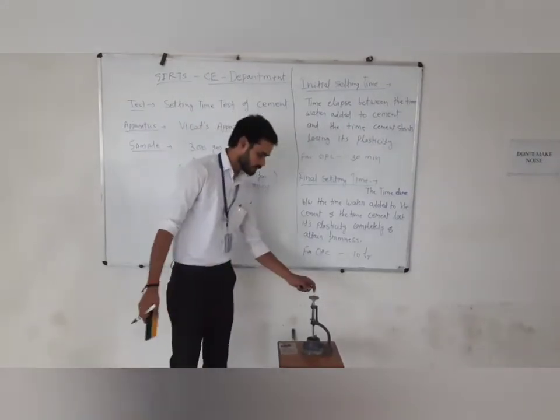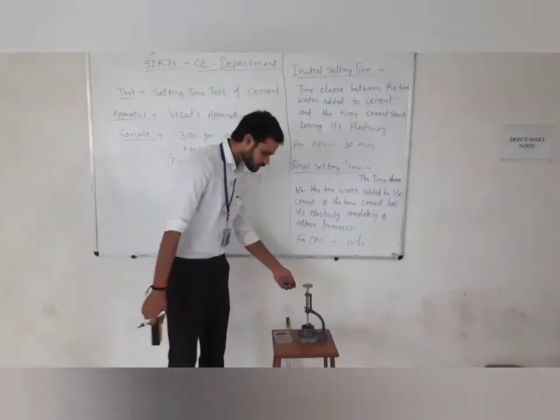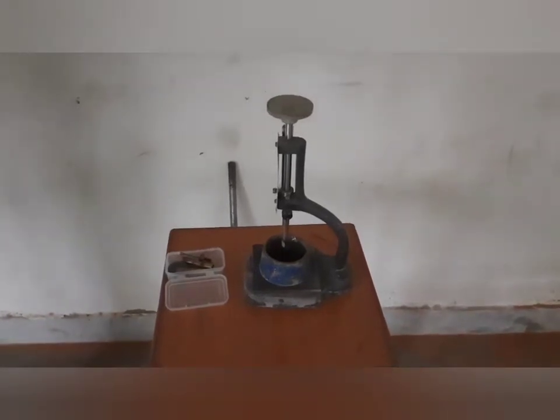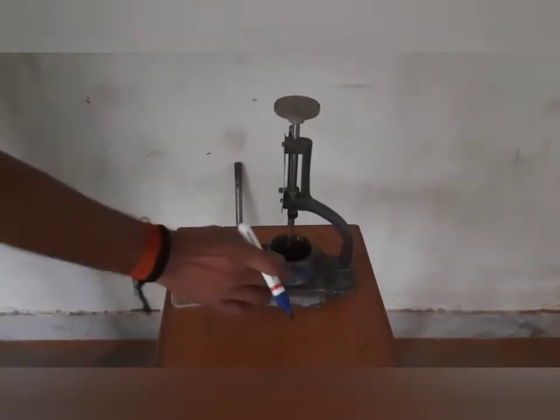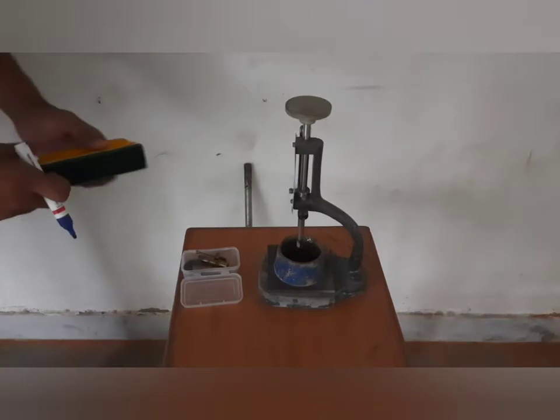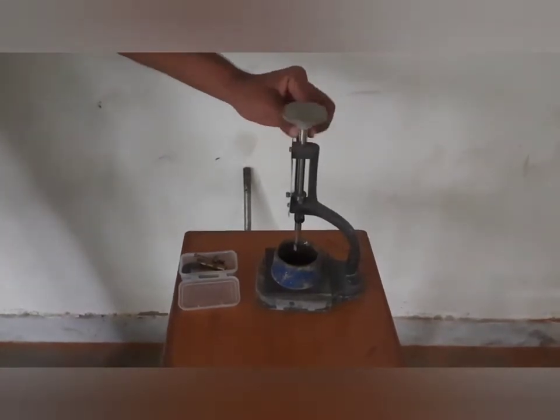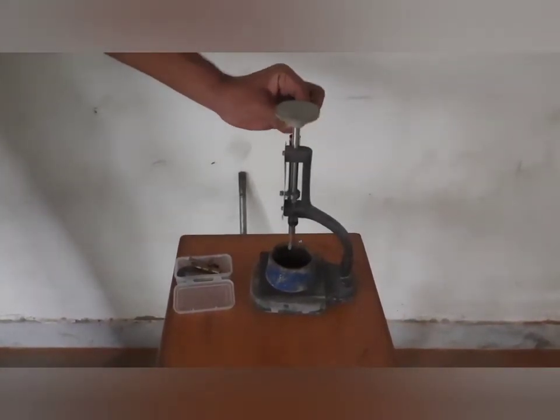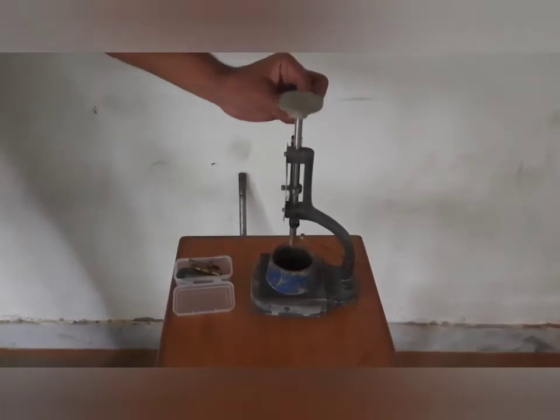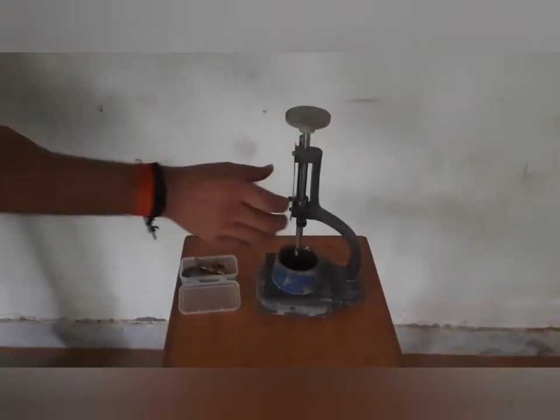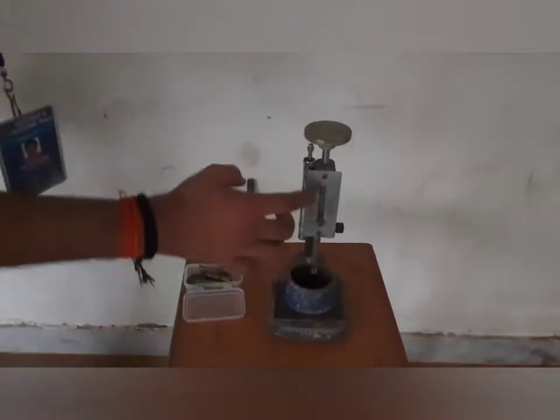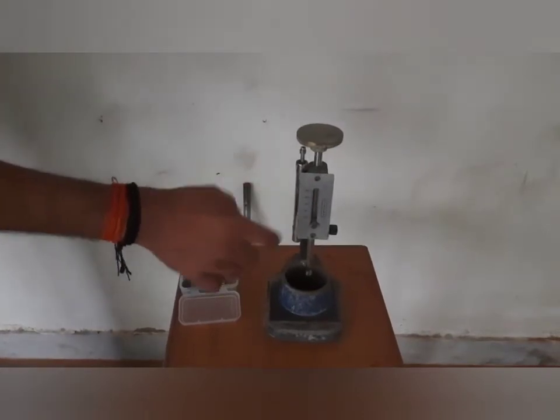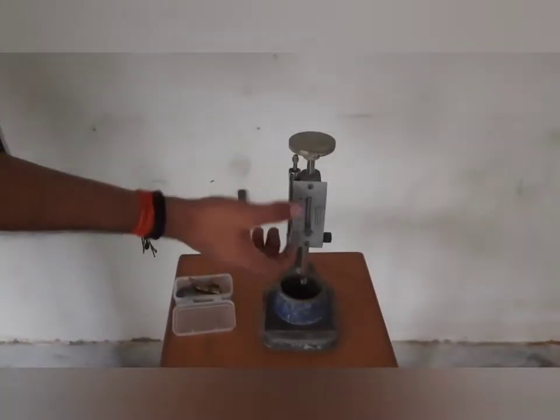This is Vicat apparatus. So this is your plunger in Vicat apparatus, from which we have needles in your sample. Then, here we have readings. We measure how much depth it has penetrated. The needle has a plunger.